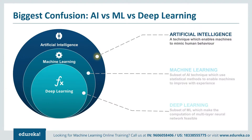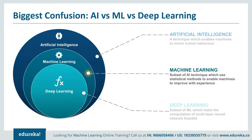Artificial intelligence is a broader concept of machines being able to carry out tasks in a smarter way. It covers anything which enables computers to behave like humans. Think of the famous Turing test to determine whether a computer is capable of thinking like a human being. If you're talking to Siri on your phone and you get an answer, you're already very close to it. So that was about artificial intelligence.